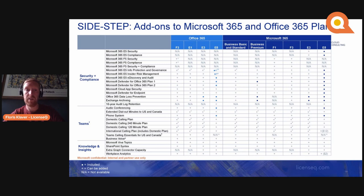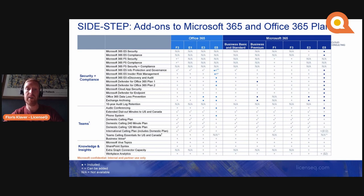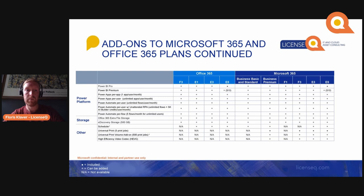So if you have an interest in Microsoft 365 E5 Security and you currently already subscribe to Microsoft 365 E3, you can add an add-on for Microsoft 365 E5 Security instead of buying the full suite. The same applies to things like a phone system — if you have F3, E1, or E3, you can add a phone system license on top. This is a continuation of the previous slide, so have a look at these products and where you can add them on.